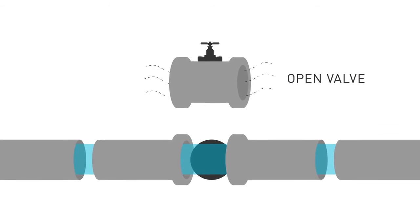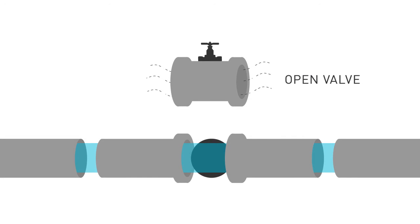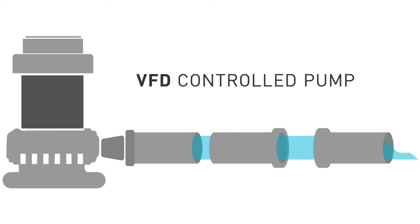If you have an application where you have vanes and dampers or maybe you have a control valve that's controlling the flow of a material, you can actually remove the vanes and dampers. You can remove the control valves and now use the speed of that fan or the speed of that pump to control the flow of that material. And you can save an incredible amount of energy just by doing this.